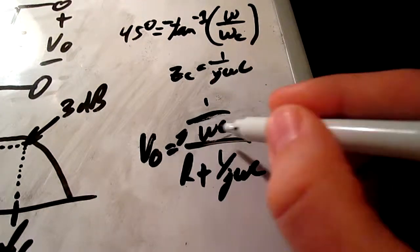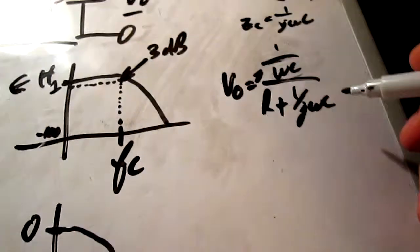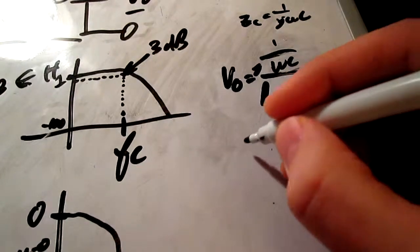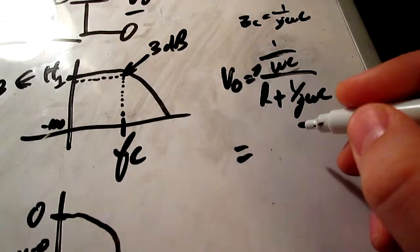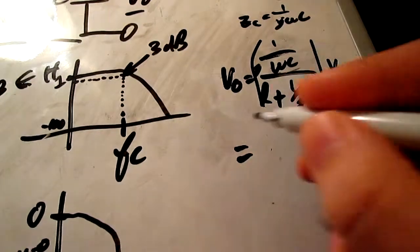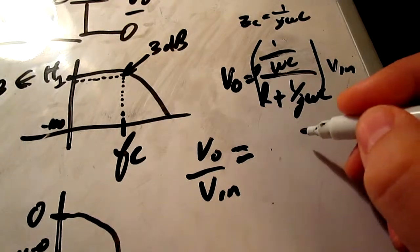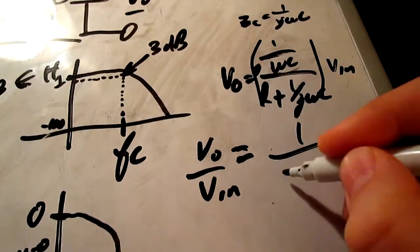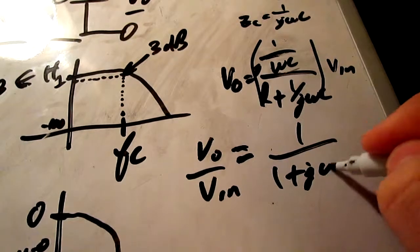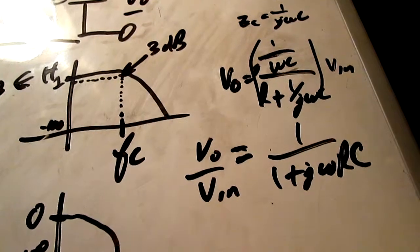So V out is equal to 1 over j omega c over r plus 1 over j omega c. It might look like magic, but this simplifies, and you can work through the arithmetic. This is all multiplied by V in, by the way. It simplifies to V out over V in is equal to 1 over 1 plus j omega r c. And there's our transfer function.